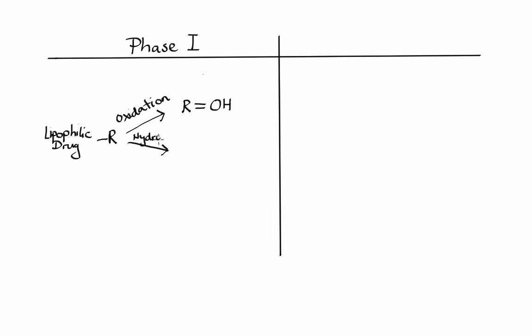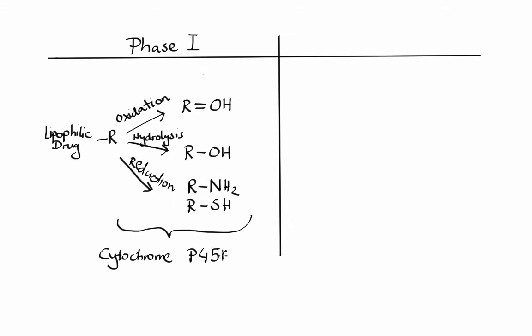Phase 1 reactions are all about making a drug more hydrophilic. These reactions involve introduction or unmasking of a polar functional group. In phase 1, we are going to see oxidation, hydrolysis, and reduction. It's also important to remember that most of these reactions are catalyzed by cytochrome P450 enzymes. Now, if metabolites from phase 1 are still too lipophilic, they can undergo conjugation reaction, which involves addition of a polar group. And this is what happens in phase 2.